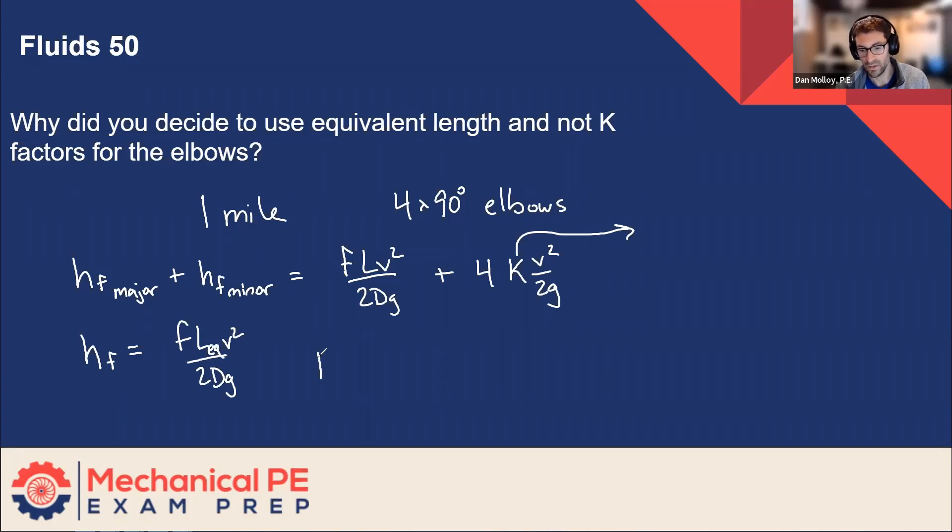With the understanding that now our length is the equivalent length which includes the actual physical length, which in this problem was like a mile of piping, we'll call that L plus four times the length for each individual elbow.